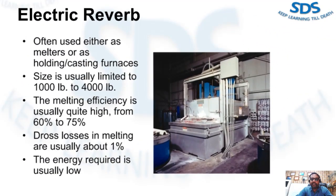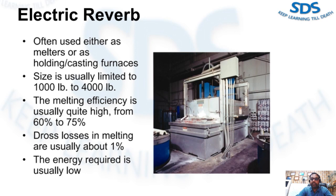Electric reverb furnaces are often used either as melters or as holding and casting furnaces. The size is usually limited to 1,000 to 4,000 pounds capacity. Based on cold charging, the melting efficiency is usually quite high — from 60 to 70 percent — and dross losses in melting are usually about 1 percent. When these furnaces are used for casting, the energy required is fairly low as the heating system only needs to maintain the metal at casting temperature. With electric furnaces, no fuel combustion gases need to be channeled off and the thermal losses are much lower than with fuel-fired reverb furnaces.